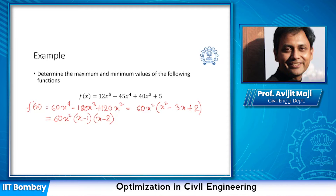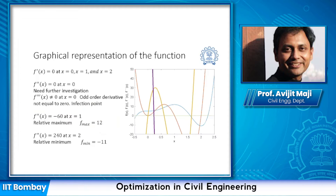If this is zero, we can clearly say x = 0, x = 1, or x = 2. These are the three points where the necessary condition is satisfied, so we need to investigate further by looking into the second order derivative values at those points.